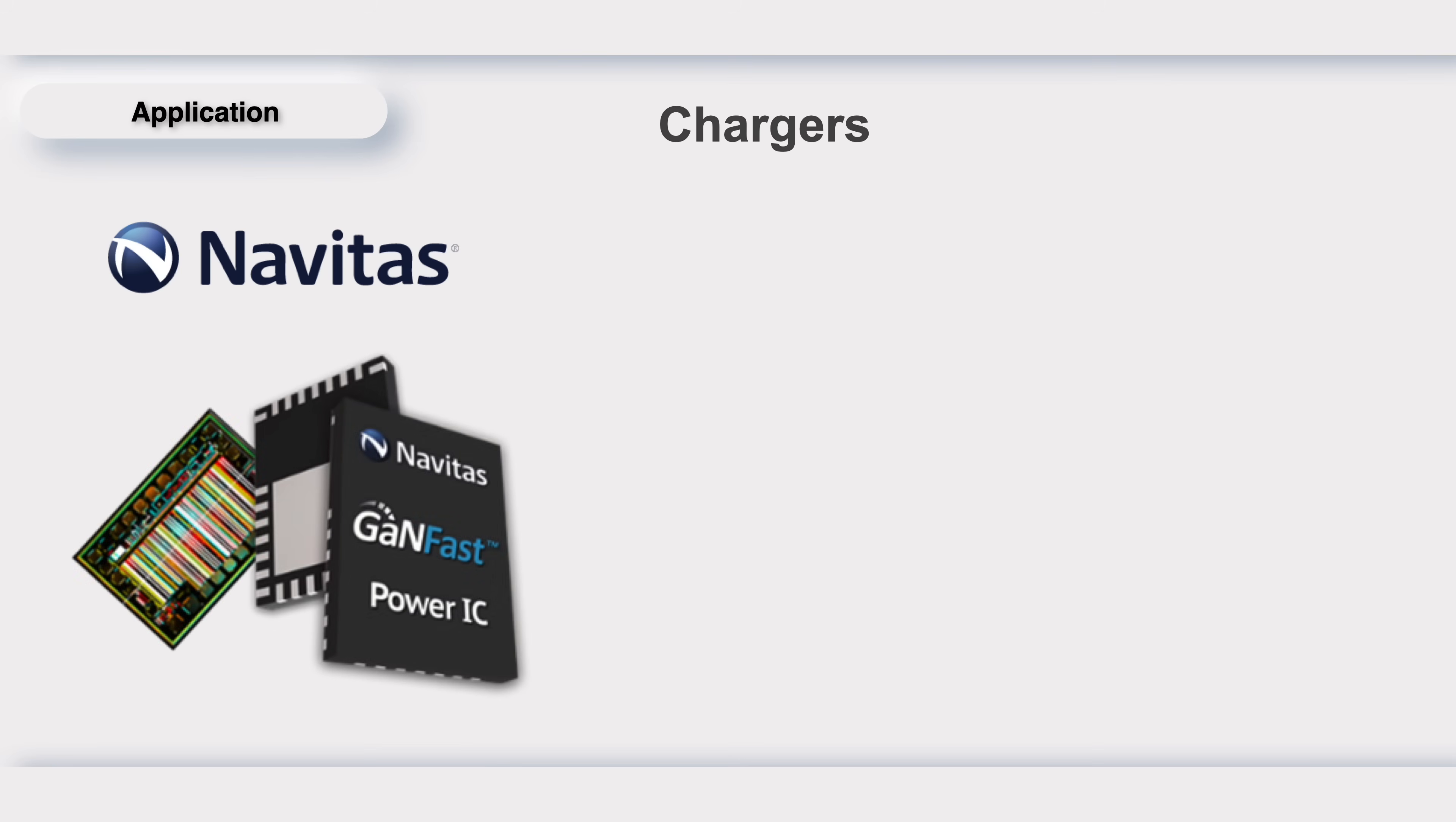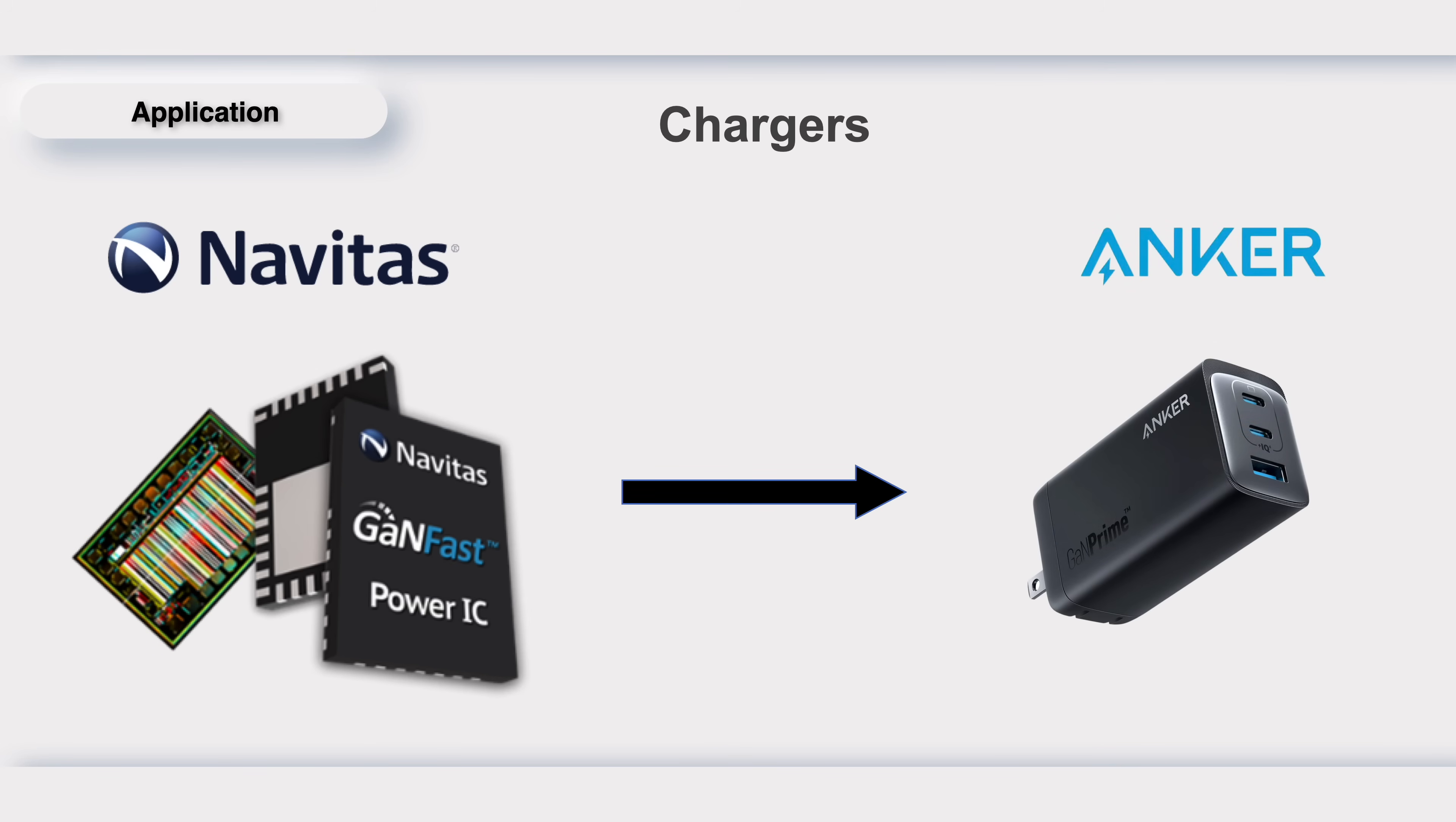But in ChargerLab, what we're most concerned about is how it is used in chargers. It's not very long for GAN components to be used in chargers. Back in 2014, Navitas was just founded, and launched the world's first GAN PowerIC prototype. In 2018,